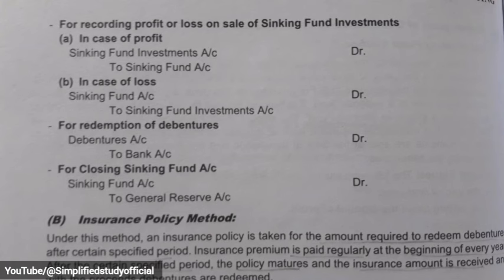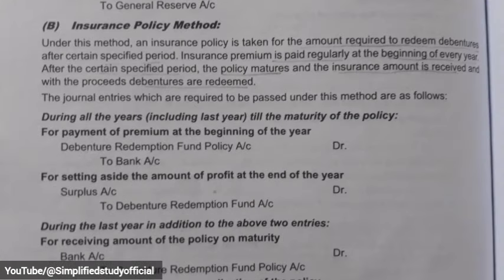In the Insurance Policy Method, the company takes out an insurance policy for the amount it needs to redeem — for example, 10 lakhs. At the beginning of each year, the company pays an insurance premium. When the policy matures, the insurance amount is received and used to redeem the debentures. The journal entry for paying the premium at the beginning of the year is: Debenture Redemption Fund Policy Account debit to Bank Account. The entry for transferring profit is: Surplus Account debit to Debenture Redemption Fund Account.